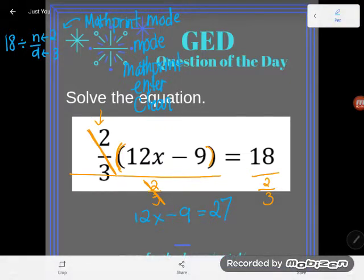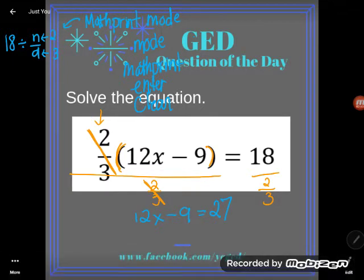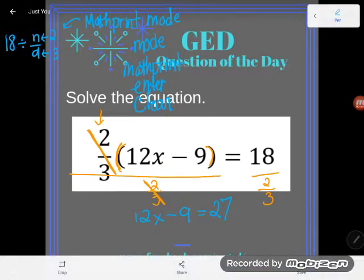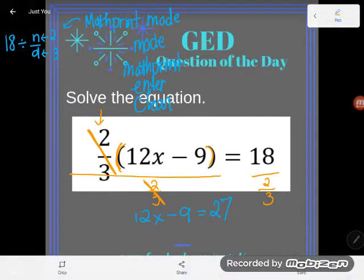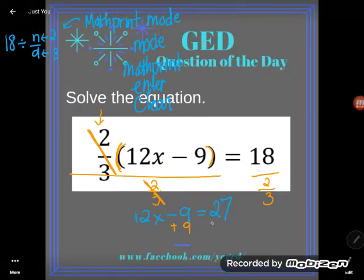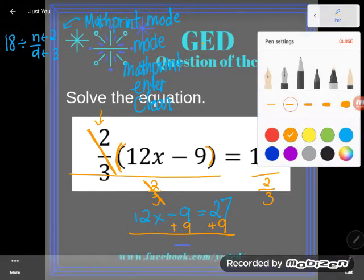Okay, now I got rid of my fraction problem, so simple enough now to use my opposites here to get rid of this 9 and this 12. I'll add 9 to both sides. And again, I chose that because when I'm solving, I work the order of operations backwards.